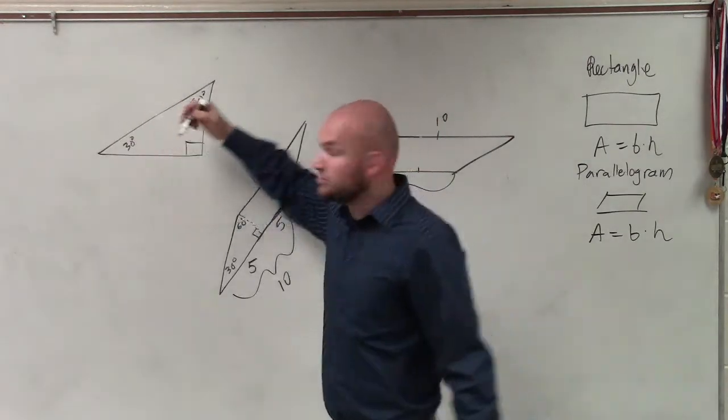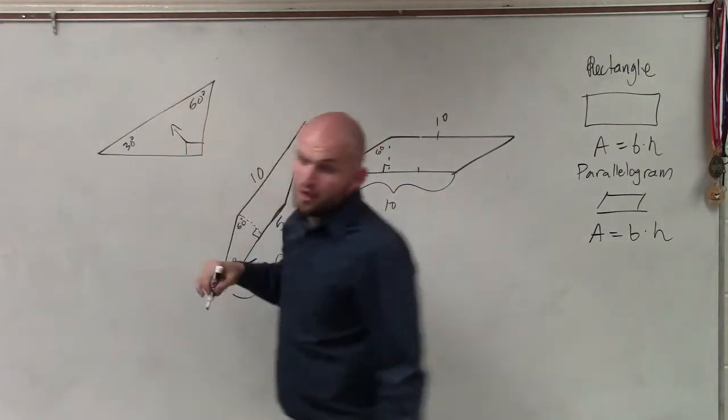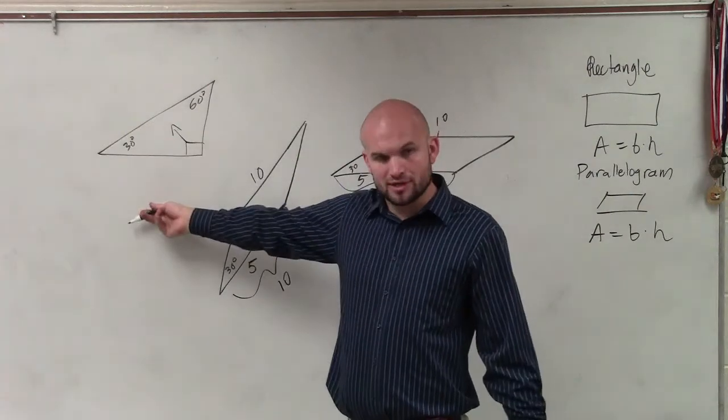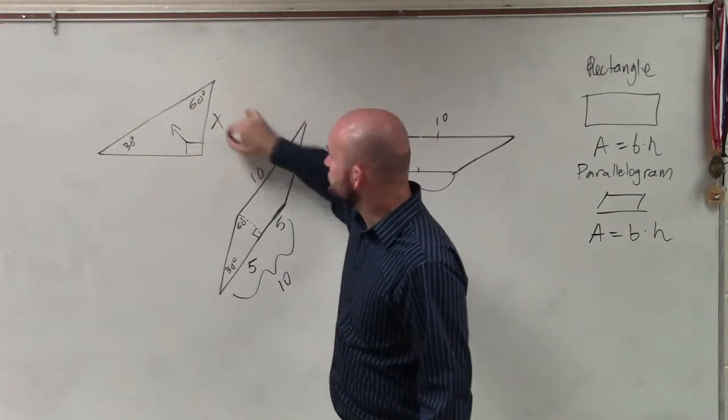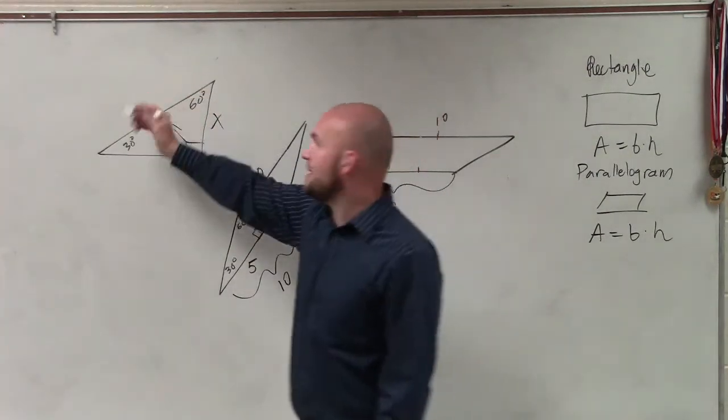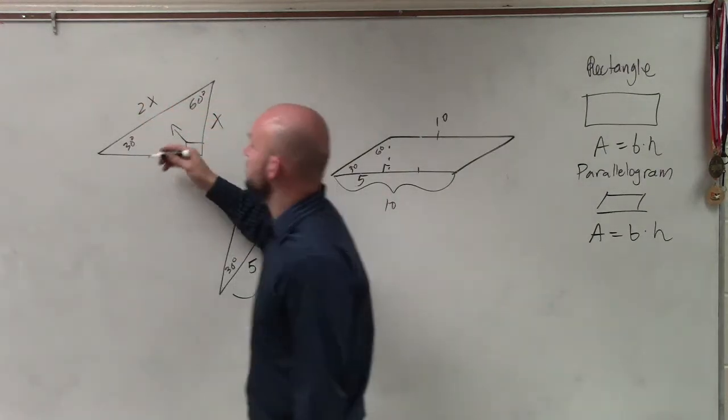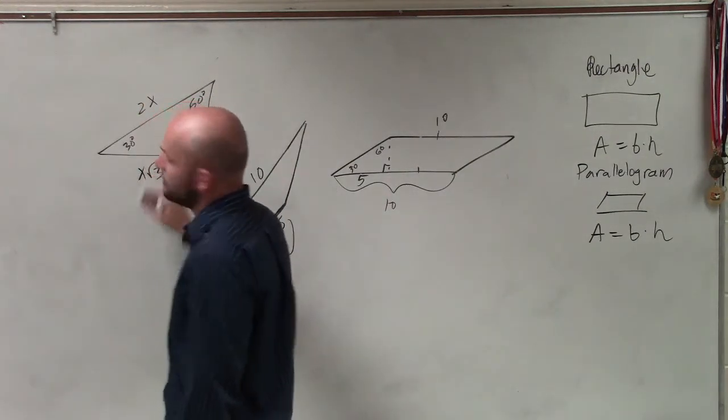We had the hypotenuse, which we all had to know how to find. We had the hypotenuse, the short leg, and the long leg. Now, what we started with was the short leg. And the short leg to the hypotenuse was 2x. And the short leg to the long leg was x times the square root of 3.